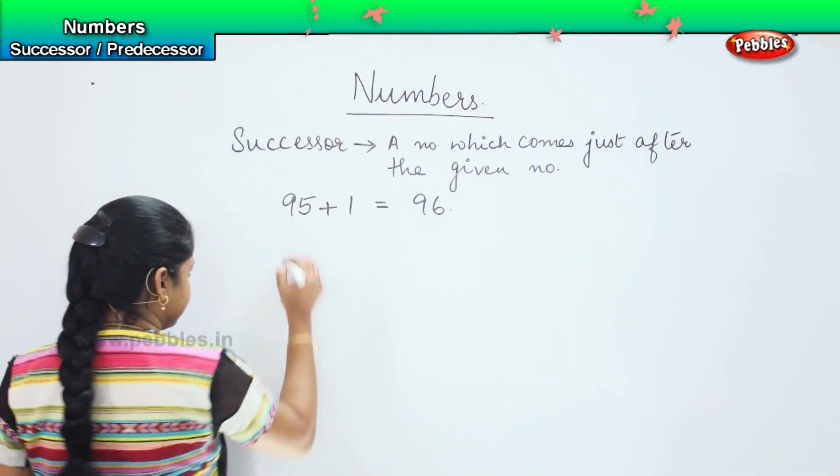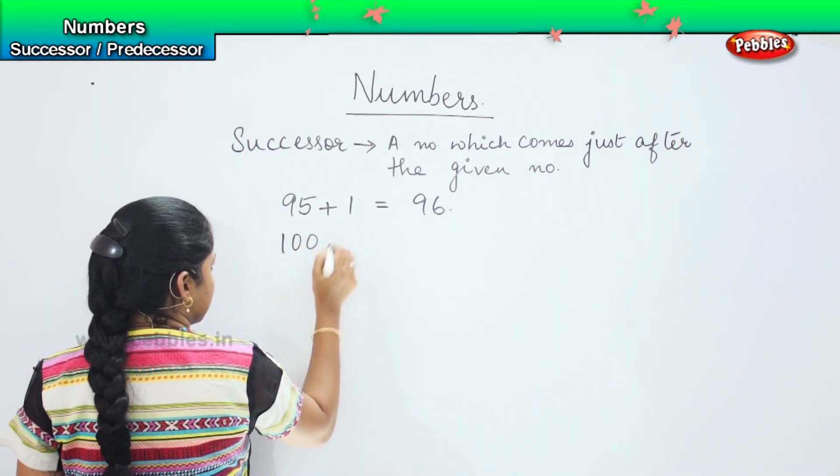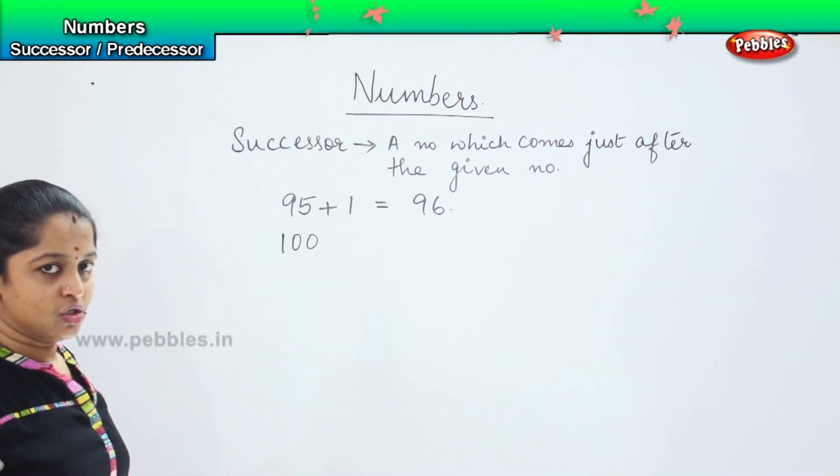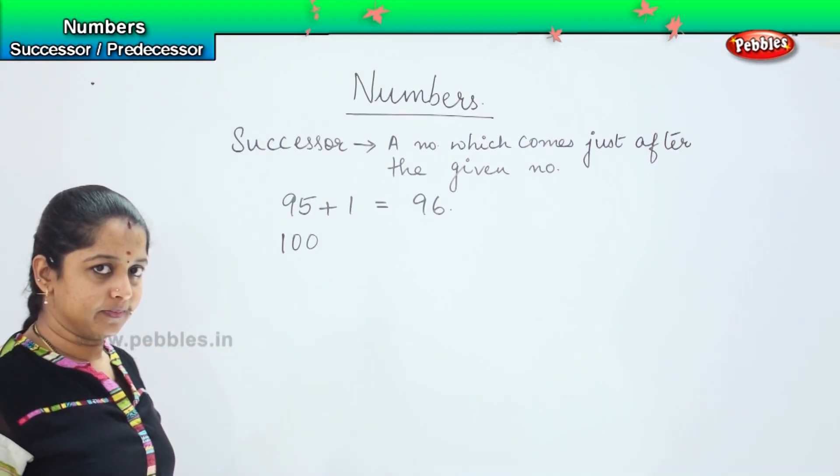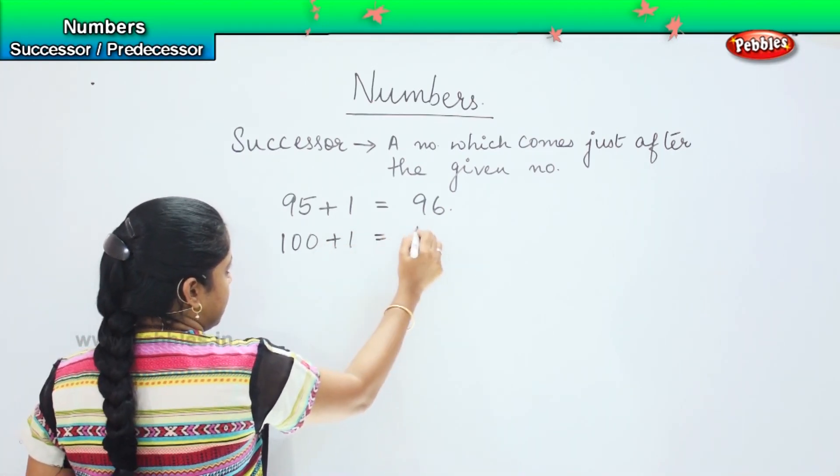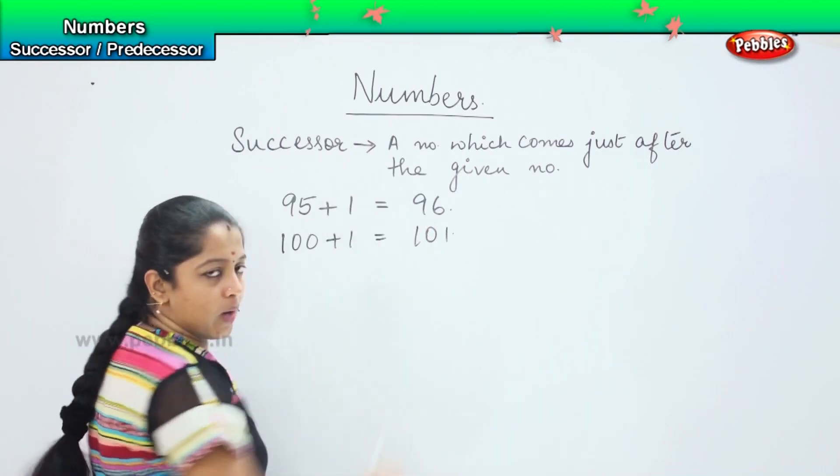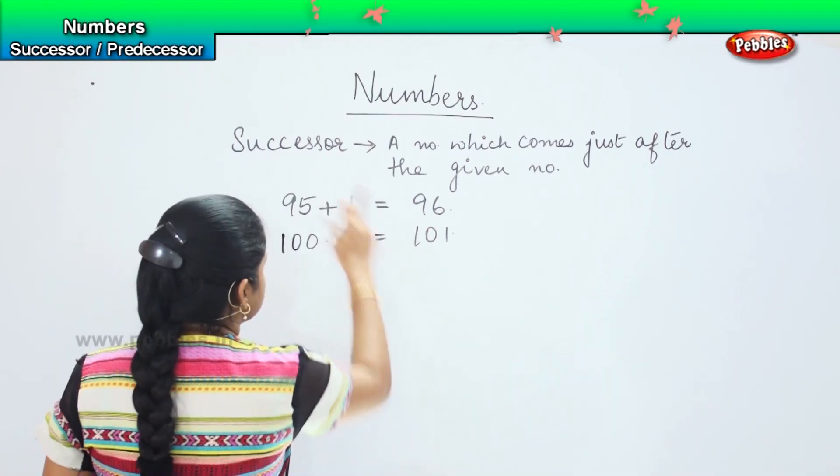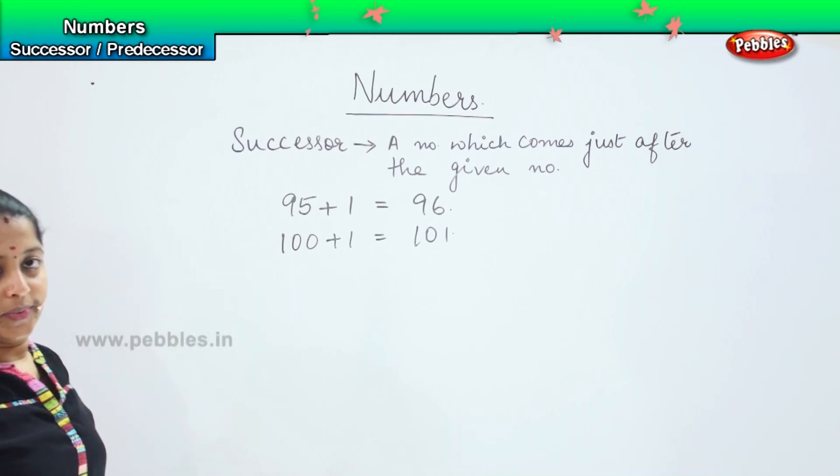Similarly, if I say what is the successor of 100, what is the number which comes just after 100? You need to add 1, so it becomes 101, so 101 is the successor of 100.